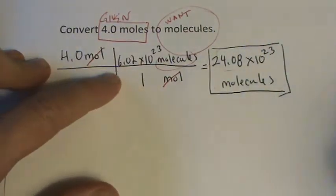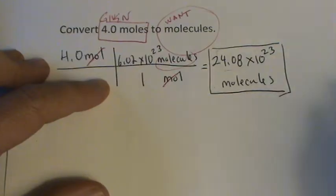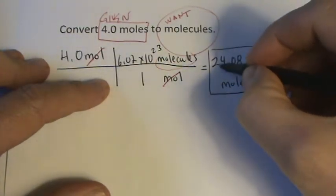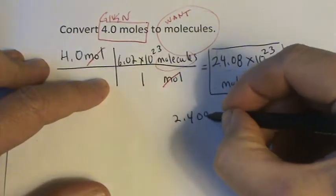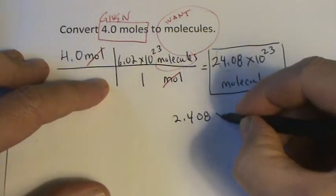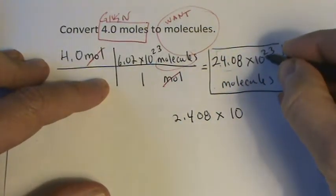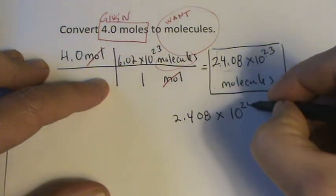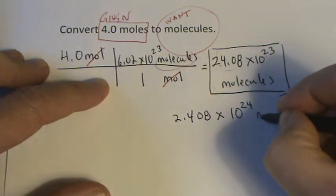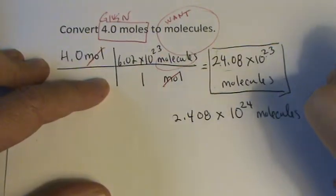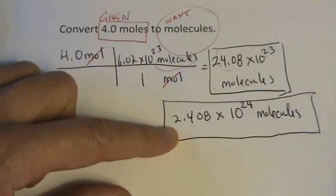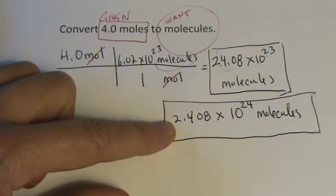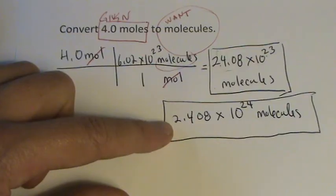But we also might want to write that in scientific notation. In there, we need to move this over 1, 2.408. And since we decrease this by 10, let's bump up that by a factor of 10. So this is another way to write it. You'll probably see this more frequently on quizzes and tests. It's kind of the accepted way to do it in science when you're reporting your answers.